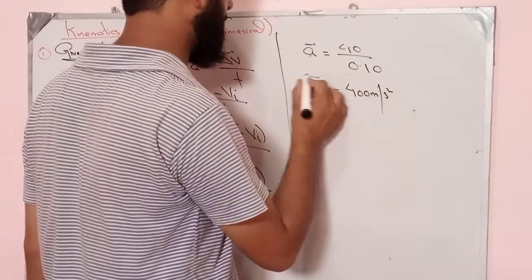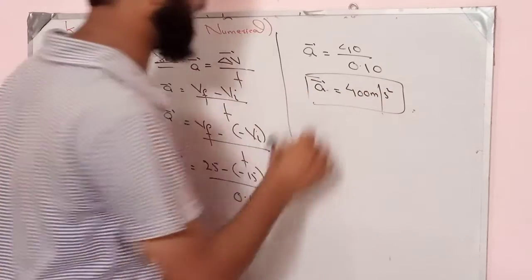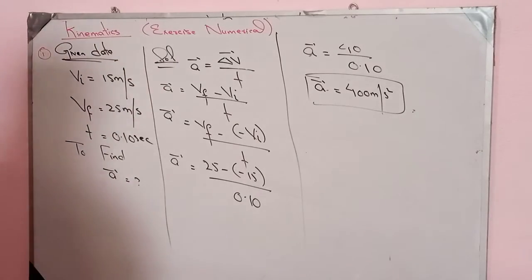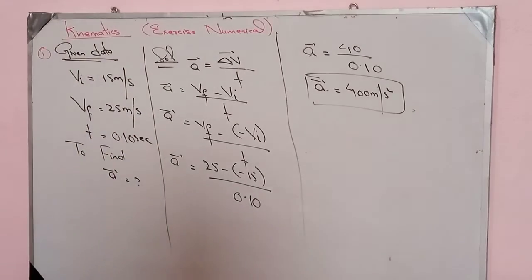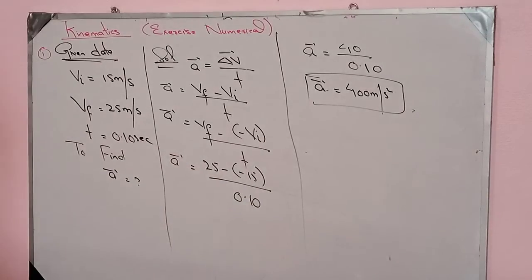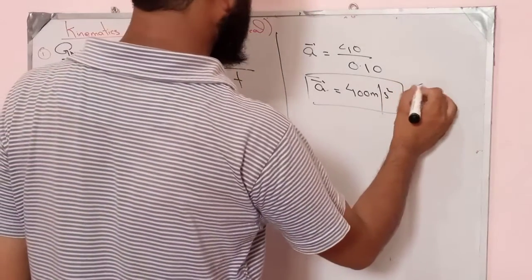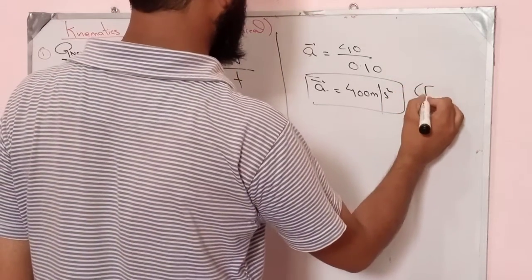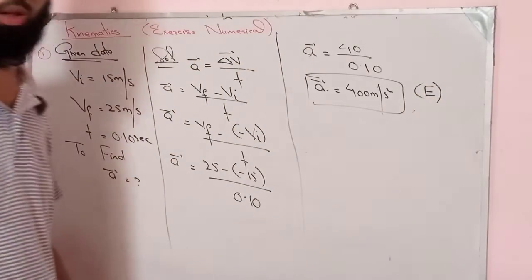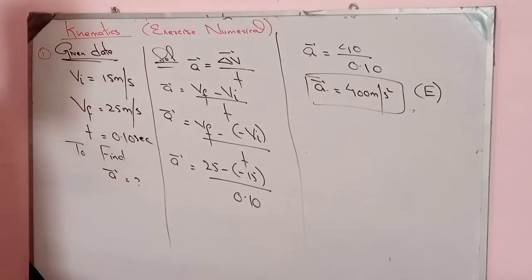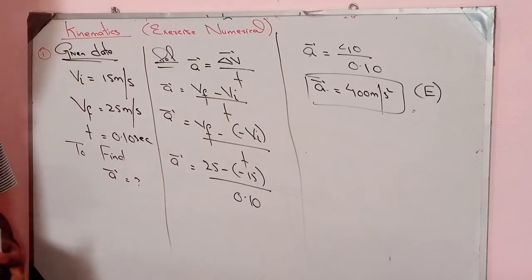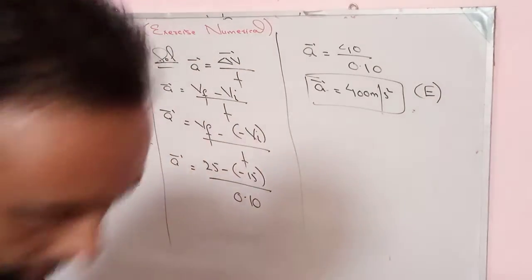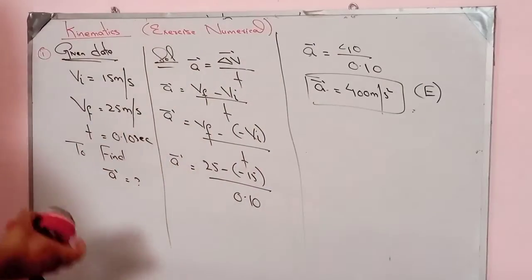Acceleration is 400 meters per second squared. The result is 400 meters per second squared in the east direction. This completes exercise numerical number 2.